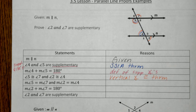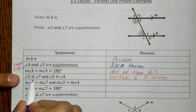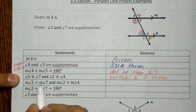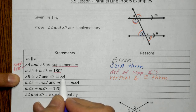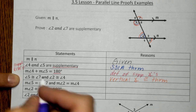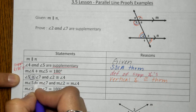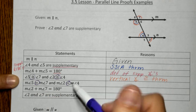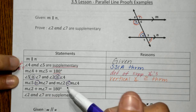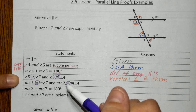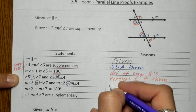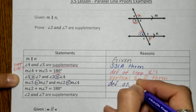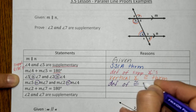Next, we move down and see that the only thing that's really changed here is we had congruent angles, and now we have their measurements are equal — angles two and four were congruent, now the measurements are equal. This is one you should start recognizing quickly: when we go from congruence to equal measurements, or the other way around, we're going to use your definition of congruent angles.